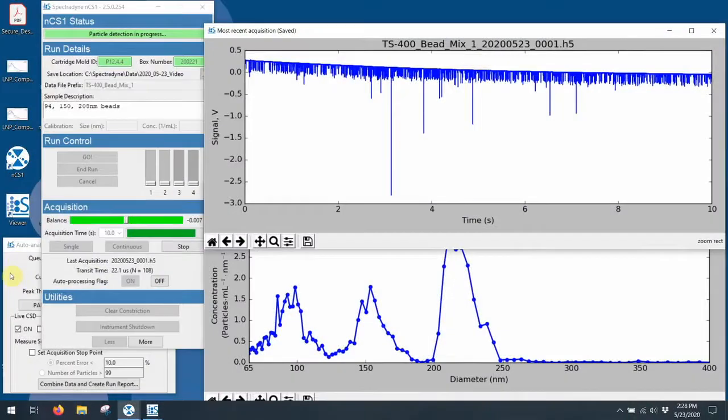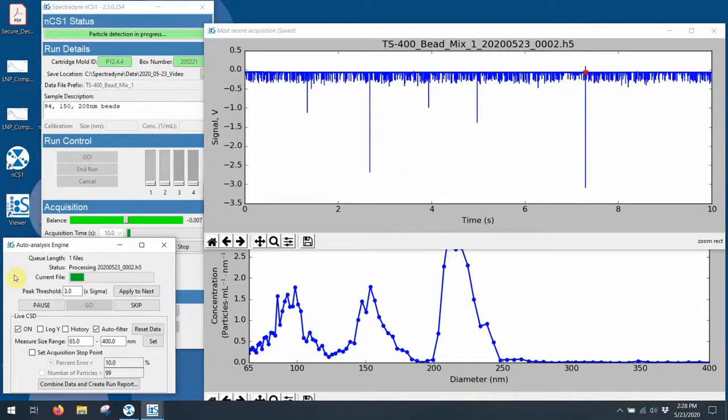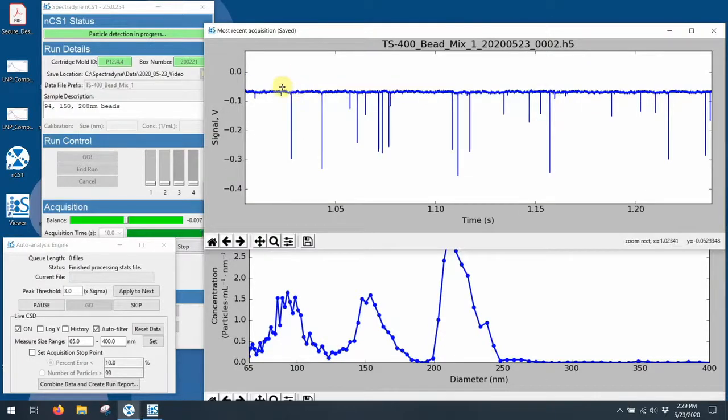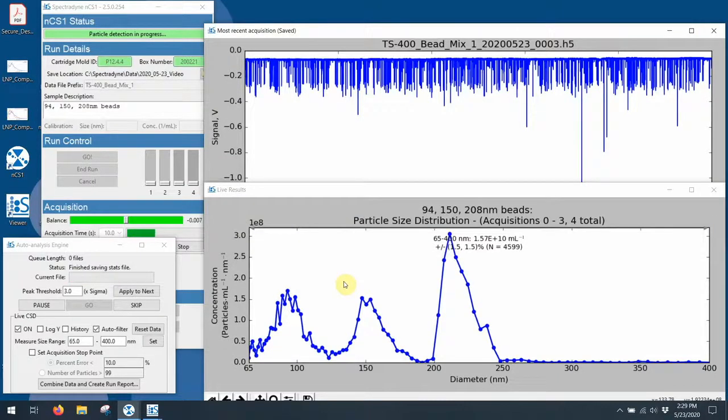So here's what this looks like in real time. The upper right window shows the raw data, which is processed and then turned into the particle size distribution in the lower right-hand window. We can zoom in and see the individual spikes that were made by the particle transits. Note that both graphs are updating in real time.